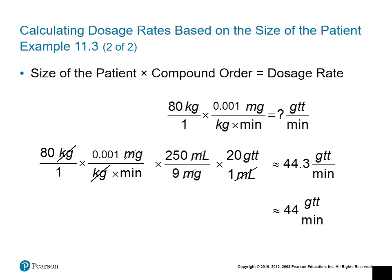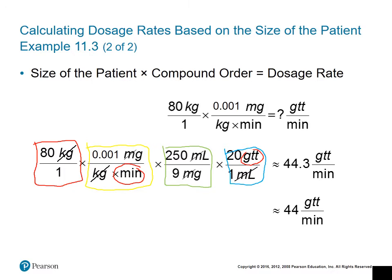To perform this calculation, we multiply the size of the patient times the compound order, then multiply by the strength and the drop factor. Starting with 80 kilograms, we multiply by the order — one one-thousandth milligram per kilogram per minute — with kilograms times minutes in the denominator. Then we multiply by the strength and the drop factor. All units divide out, leaving drops per minute. The answer is 44.3 drops per minute.